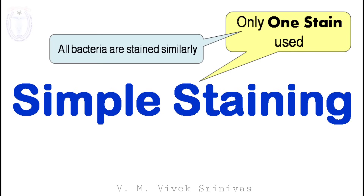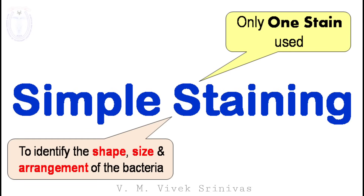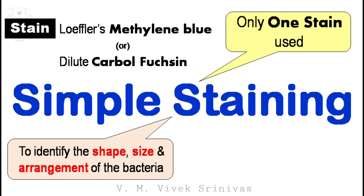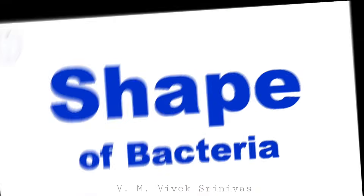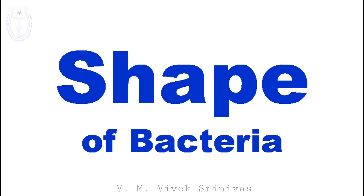Simple staining is used just to identify the shape, size, and arrangement of the bacteria. Stains like either Loeffler's methylene blue or dilute carbol fuchsin staining solution are used. Before that, we will have a brief discussion on the different shapes of bacteria.